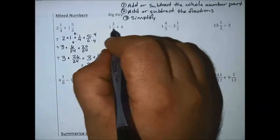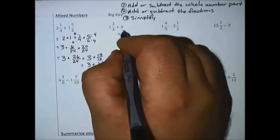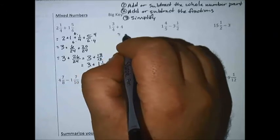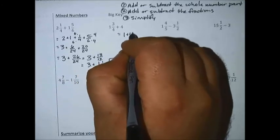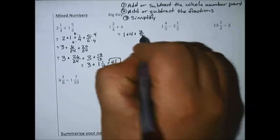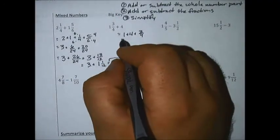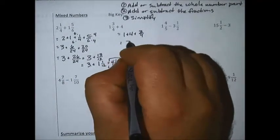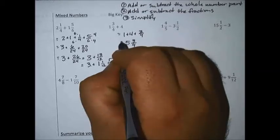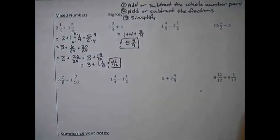The next one: 1 and 3/4 plus 4. Add the whole number parts — 1 plus 4 is 5 — then bring along the 3/4. The answer is 5 and 3/4. See how easy that was — those problems are nice!